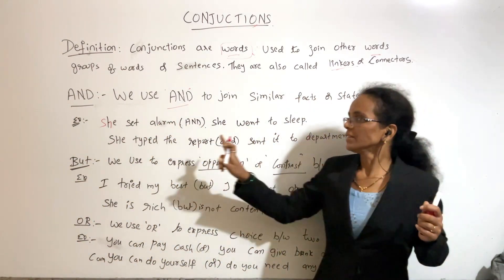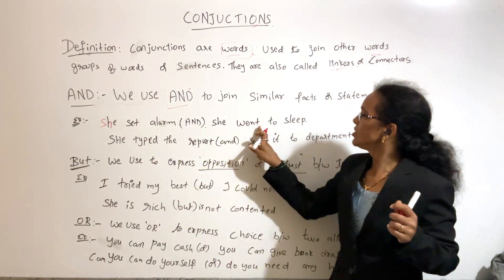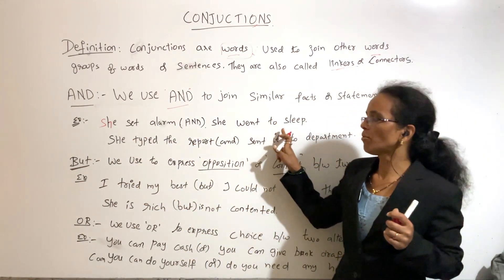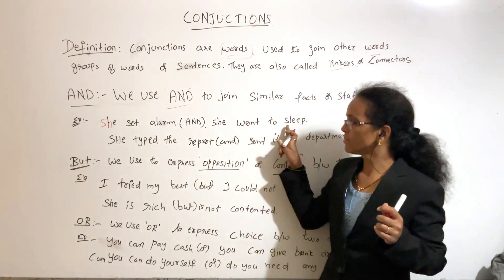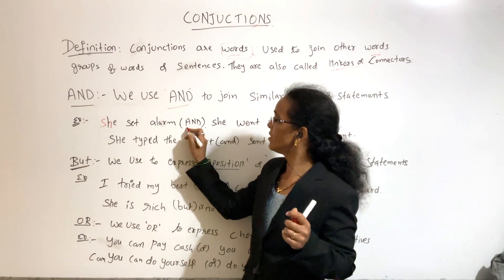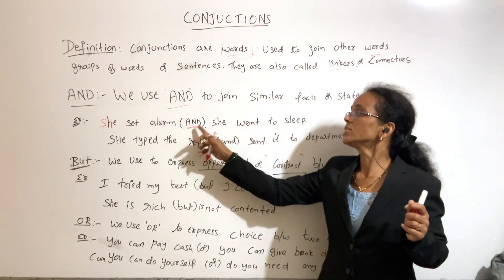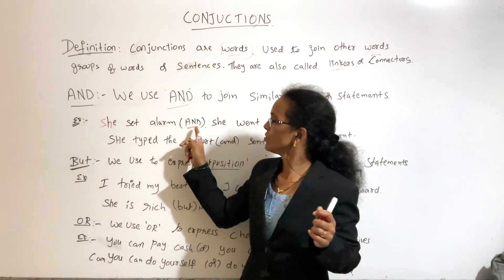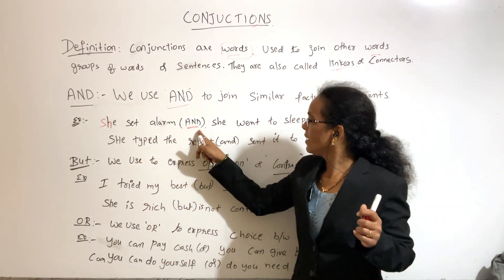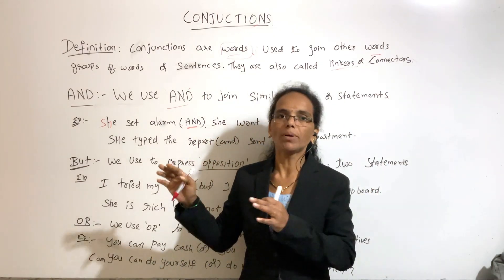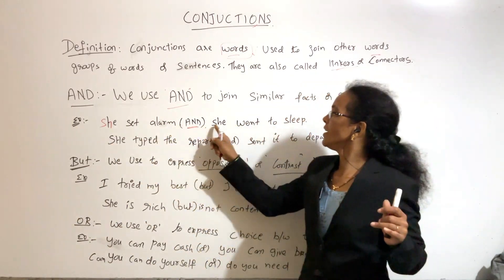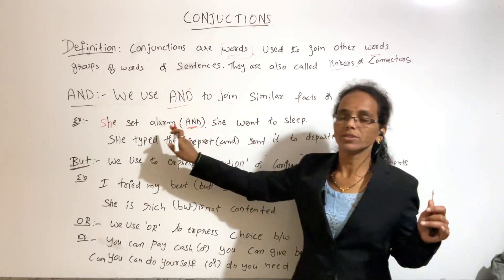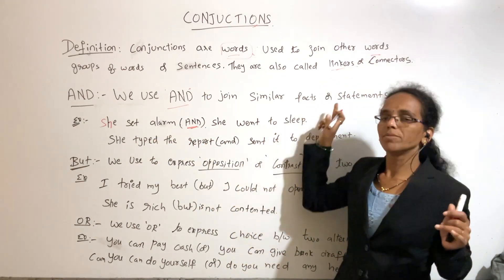For example: She set alarm AND she went to sleep. Both are positive statements. When there are two positive statements — two similar facts or similar statements — we use AND. She set alarm and she went to sleep — here is the AND.